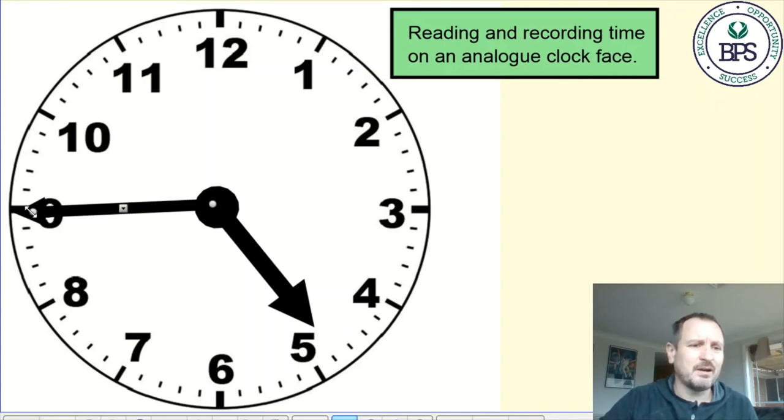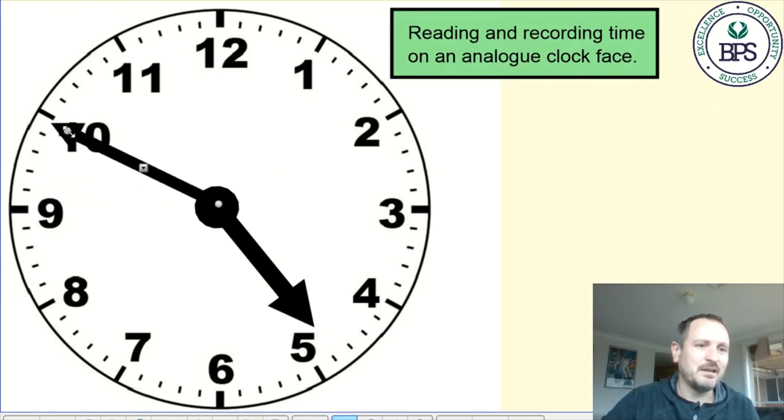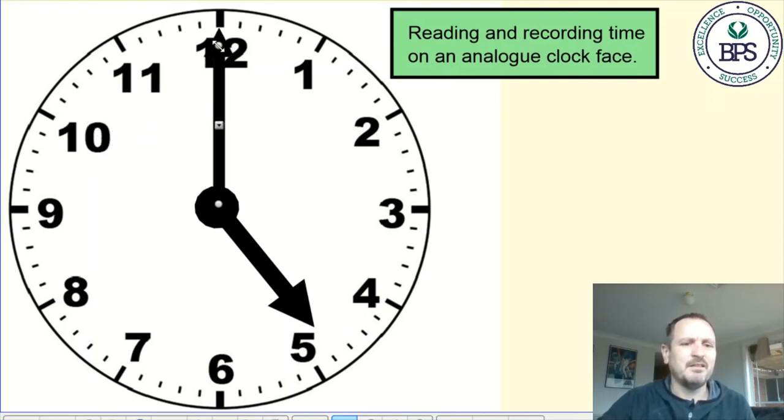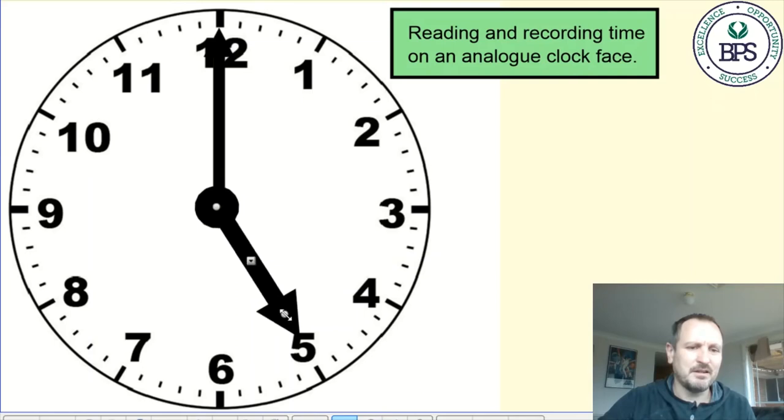Every time this hand ticks around from one number to the next, that's five minutes of movement. So we go from the beginning, this would be o'clock, and I'm not going to worry about moving this hand for this demonstration, but remember this would be moving all the way through the hour. So that would be five o'clock.